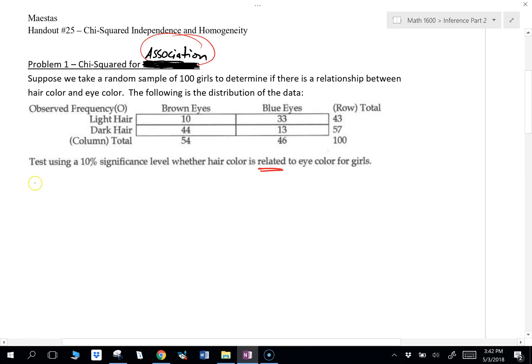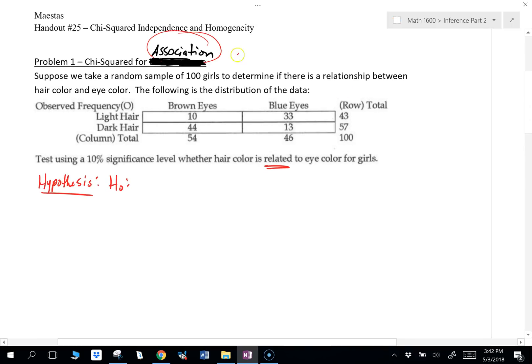So the first thing we're going to do is write our hypothesis. Now, our null and alternative hypothesis for chi-square tests for association, sometimes you'll also see this as a chi-square two-way test. You might see that referenced in a stats book or in a calculator. So I just want to make sure you understand that that's what we're talking about. So our hypothesis are all going to be in words. So no variables in this case.